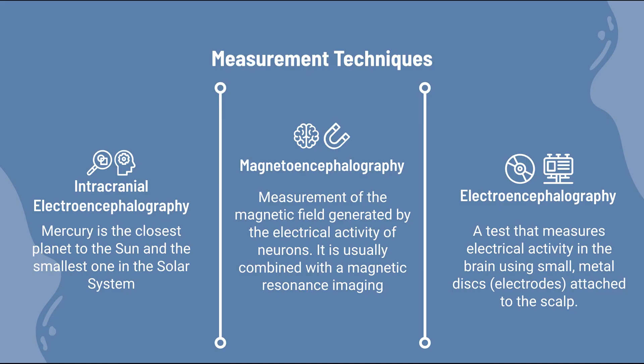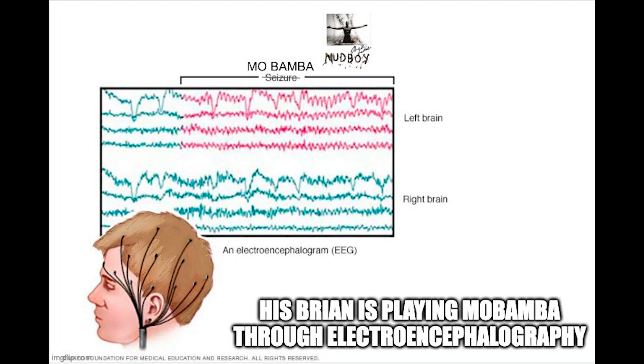Neurooscillations can be measured using a variety of techniques, including electroencephalography, magnetoencephalography, and intracranial electroencephalography. These techniques allow researchers to track the temporal dynamics of neural activity and identify patterns of oscillatory activity that correspond to specific cognitive processes.